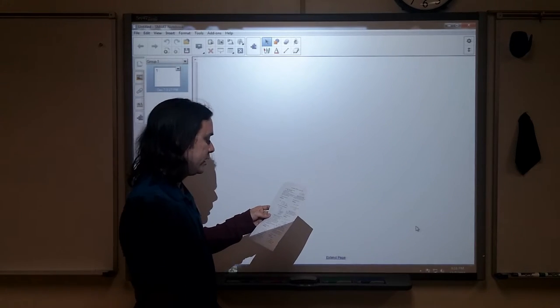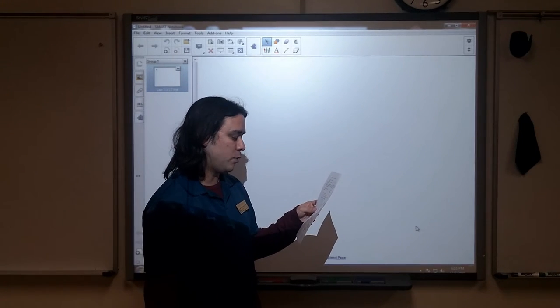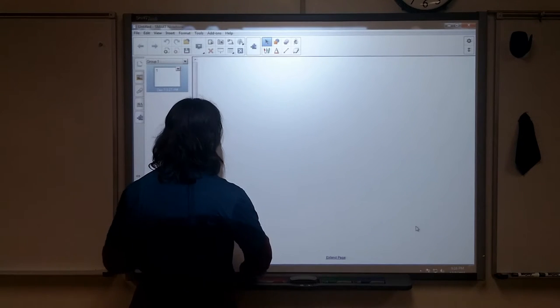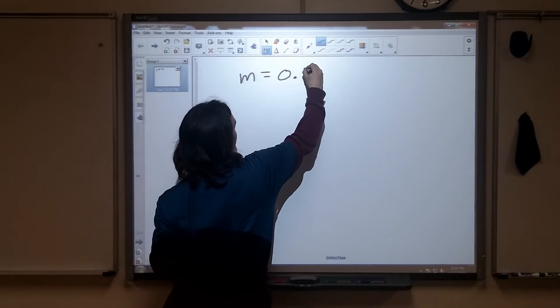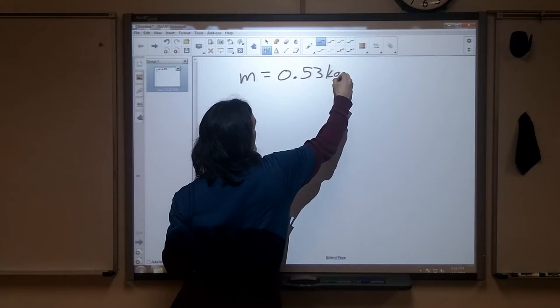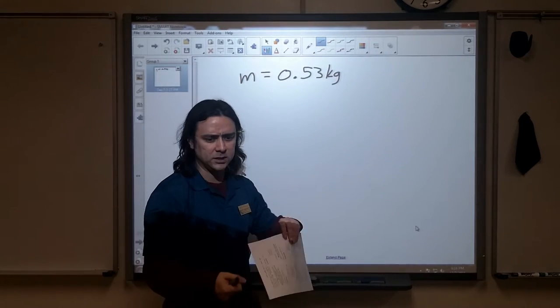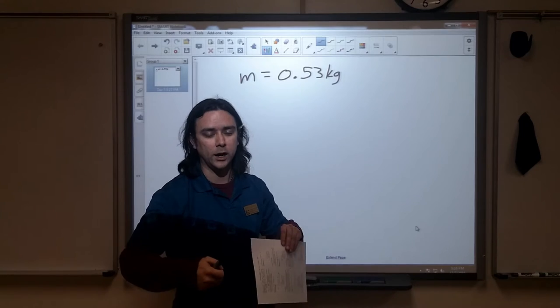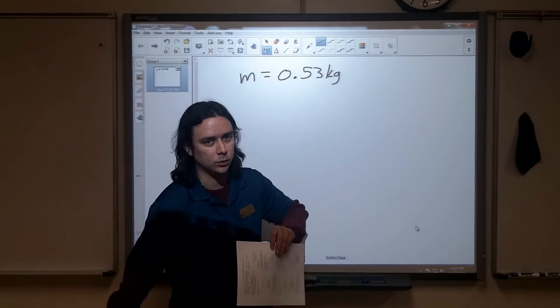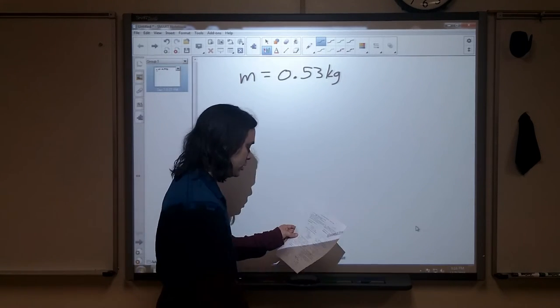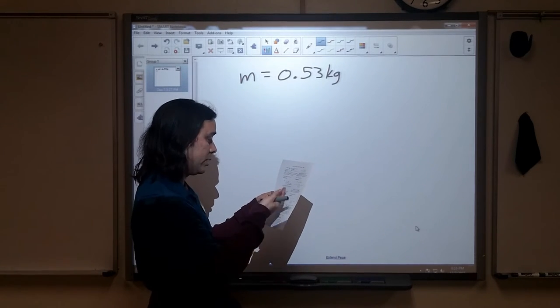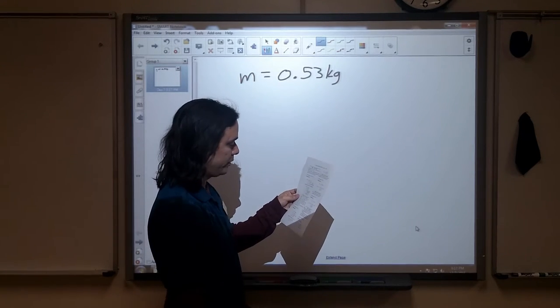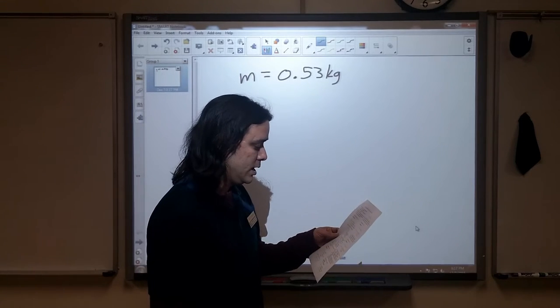Each croquet ball in a set has a mass of 0.53 kilograms. So we're dealing with masses that are 0.53 kilograms. Croquet is a game with basically, I could be getting this wrong, but I think it's the one with the little hammer things that you knock croquet balls around the yard with. Each of the croquet balls apparently has a mass of 0.53 kilograms, at least according to the information that I've got.